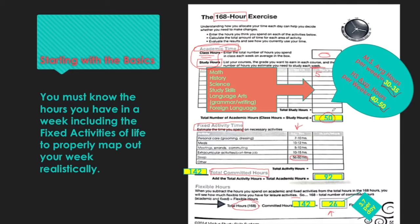In our scenario, I took the high end of all these numbers: a 50-hour school week and all the top fixed-activity averages, giving me 92 fixed hours. I tallied them up to a total of 142 committed hours, subtracted from 168, and I still have 26 hours a week of flexible time — about 3.7 hours of flexibility per day.